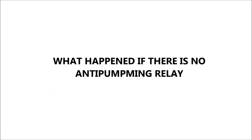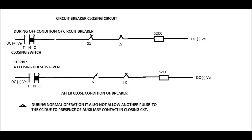Now, what happens if there is no anti-pumping relay? If no anti-pumping relay is used, the circuit diagram is as shown in this figure. In this case, if a closing pulse is given and we hold the control switch in the closed position — providing a continuous DC pulse to the closing circuit — the closing coil will energize and operate the breaker to make it ON, and the auxiliary contacts change their positions.